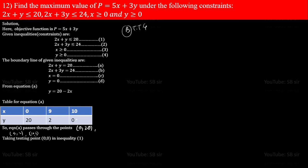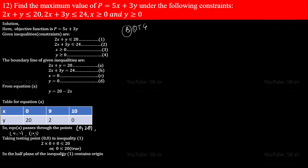Now let's take the testing point. Taking testing point (0, 0) since there is a constant on the right-hand side. Substituting: 2×0 + 0 ≤ 20 gives 0 ≤ 20, which is true. So the half plane of inequality 1 contains the origin.